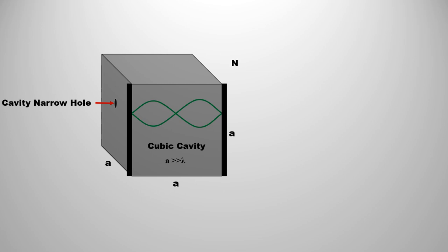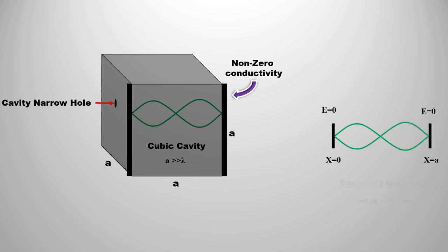This requires non-zero conductive walls. If conductivity is zero, then the walls will be transparent to radiation. Hence, the conductivity of the walls is non-zero, so the electric field at the wall will be zero. This is a boundary condition. Rayleigh-Jeans law is based on how many modes of electromagnetic radiation are present in the cavity and, on average, how much energy is in each corresponding mode.